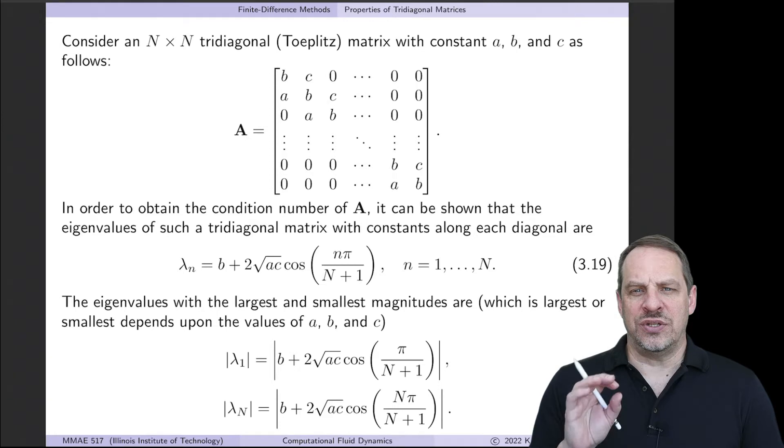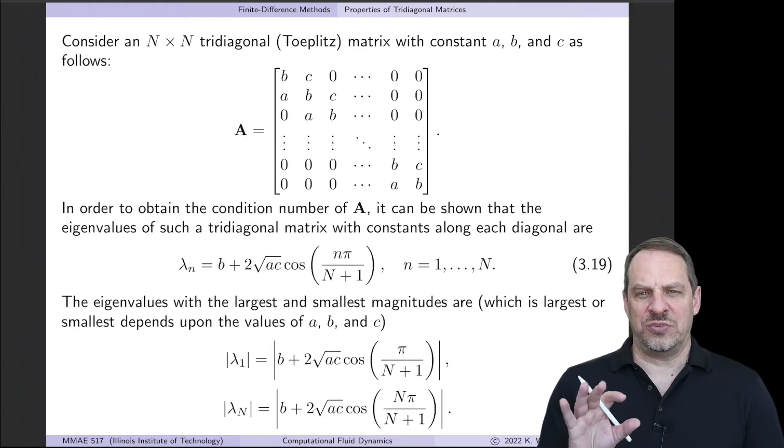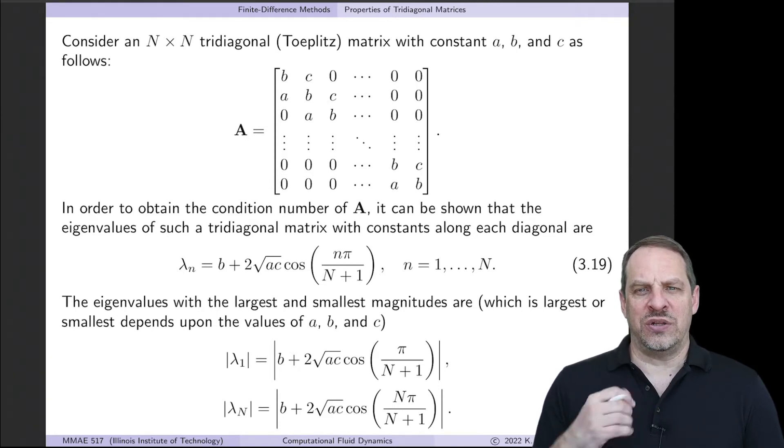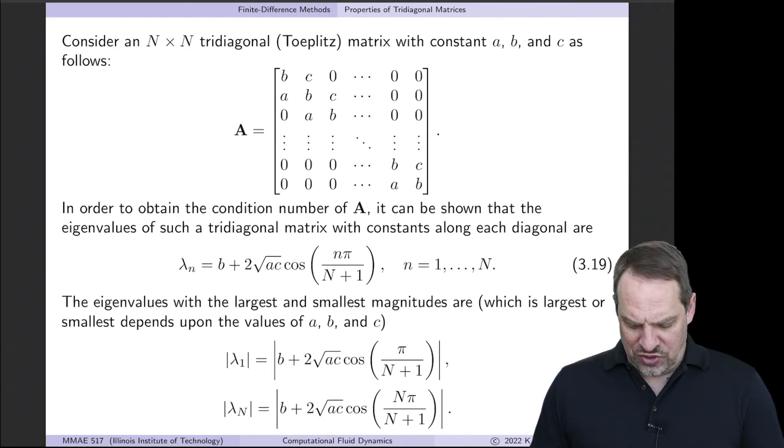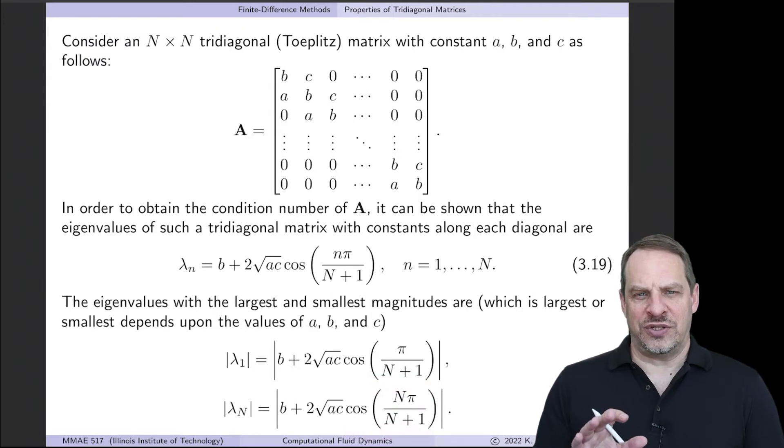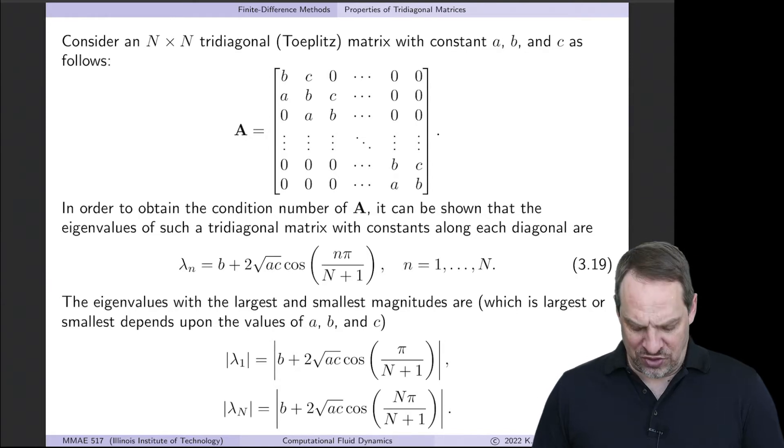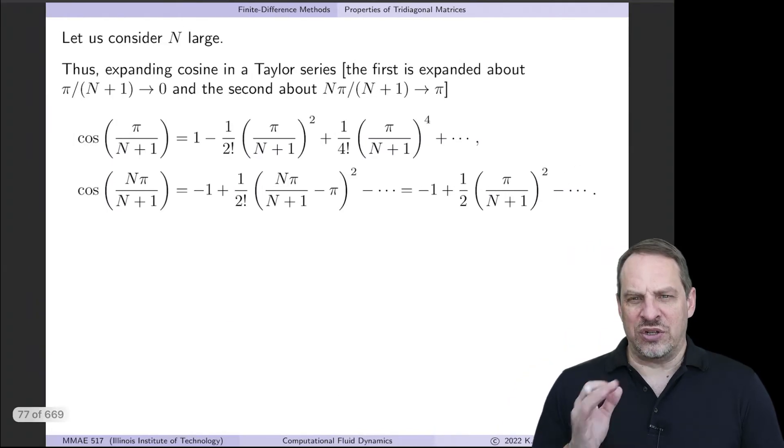So what I'd like to do is to get to the condition number for such tridiagonal matrix, but before we do, let's show how we can get a large N approximation of the condition number. So we're going to take a look at this cosine term and expand those using Taylor series, and as N becomes large, then we can get an approximation for these cosine terms.